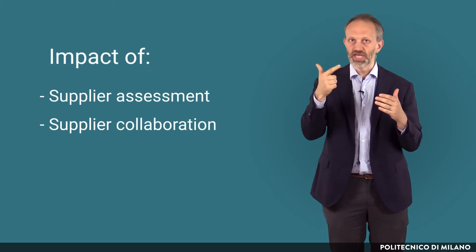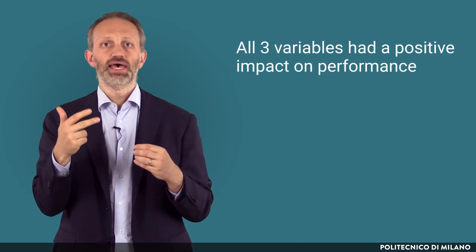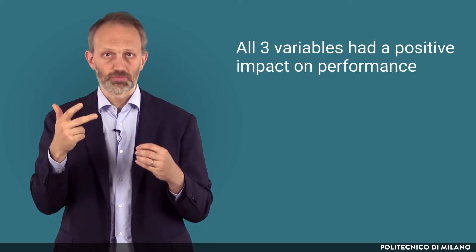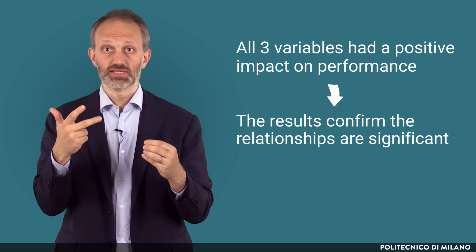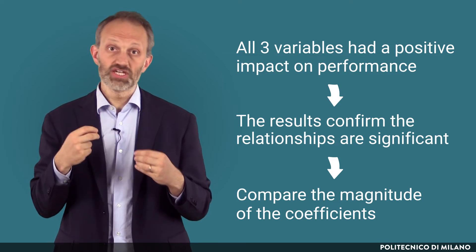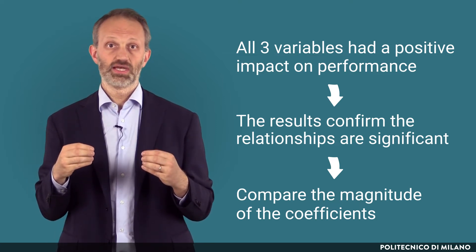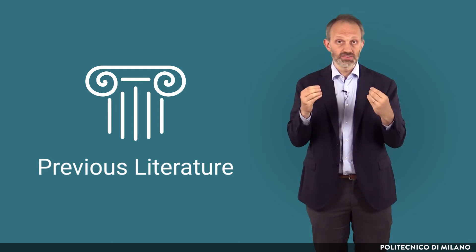Let's recall the example we saw in the previous lecture about the impact of supplier assessment, supplier collaboration, and supply-base redesign on performance. If we hypothesize that all three independent variables had a positive impact on performance, and our results confirm that the three relationships are positive and significant, we are also interested in comparing the magnitude of the three beta coefficients to understand if there are differences, and if so, which one is greater. This also needs to be compared with previous literature and discussed in its implications.